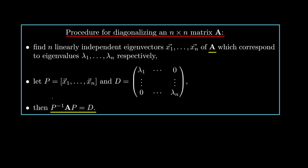So how do we actually calculate the matrix P and the matrix D? The method tells us: we need to find N linearly independent eigenvectors. If we can't find N linearly independent eigenvectors, then the matrix isn't diagonalizable and we can't do this.